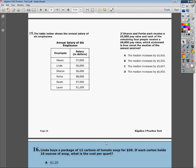This is the Tennessee Endicor Salgebra 1 practice test number 2, question number 15. The question says the table below shows the annual salary of 6 employees. If Sarah and Portia each receive a $5,000 pay raise and each of the remaining 4 people receive a $6,000 pay raise, what is true about the median of the annual salaries?